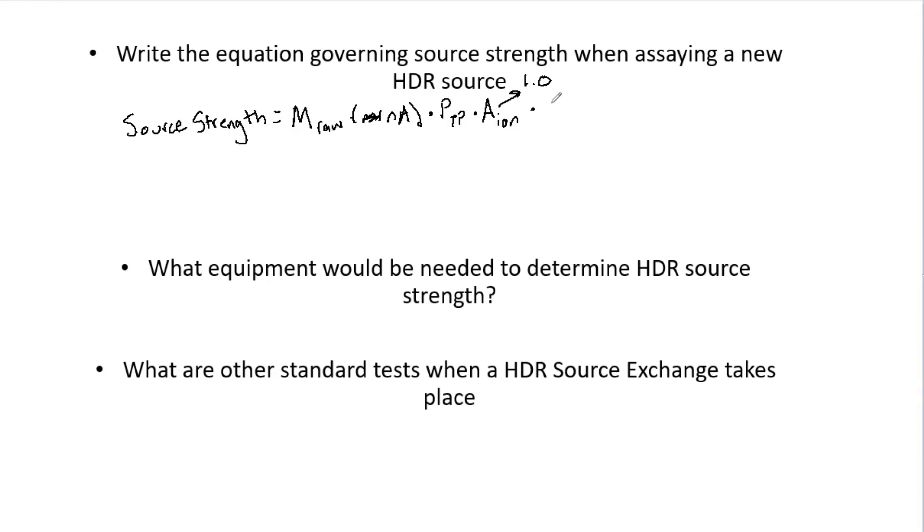Next we have our electrometer factor. I'm just going to put EF here. Again, most of the time this is 1.0, and then finally we have our chamber factor.